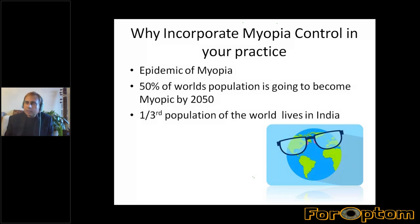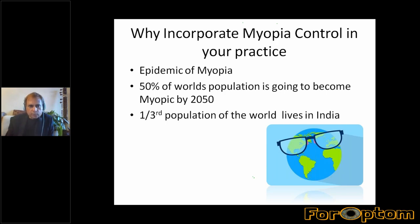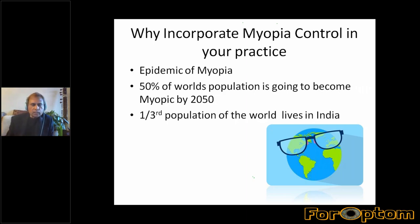Why should we incorporate myopia control? That's the basic thing. We have been doing optometry practices — refraction, contact lenses, diagnostics and a lot of other stuff. But the whole world is going to become myopic — almost 50% of the population by 2050. This is one of the predictions from the Brian Holden Vision Institute. It is an epidemic of myopia. It is related to regions, particular communities and races. It is a genetic factor that combines with the natural environment and manifests.